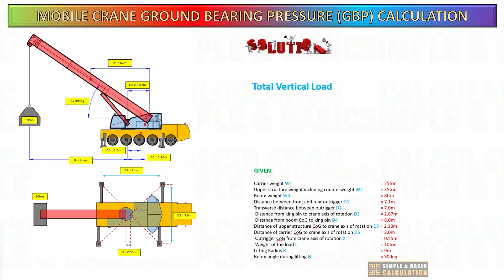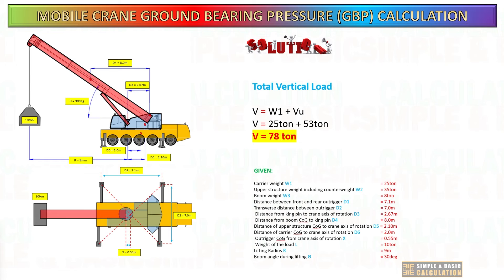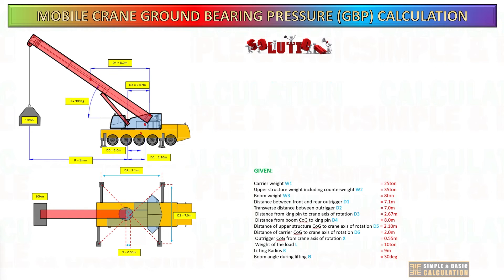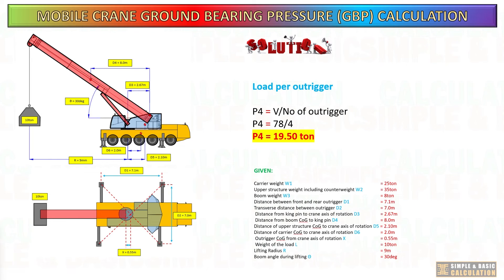Next, calculate the total vertical load. To get this, add the weight of the carrier and the total vertical load of the upper structure. Then calculate the load in each outrigger by dividing the total vertical load by the number of outriggers.